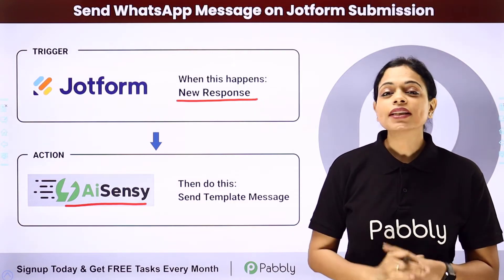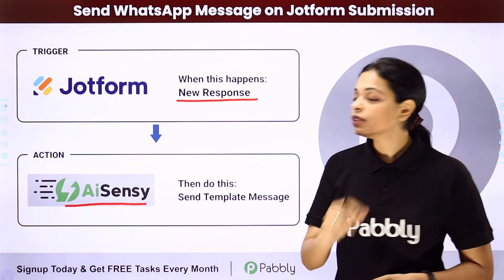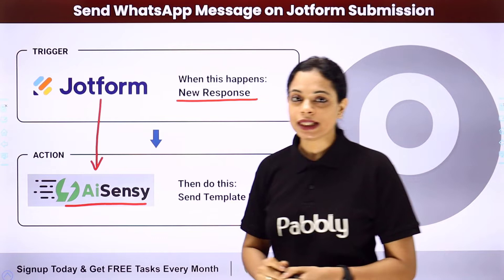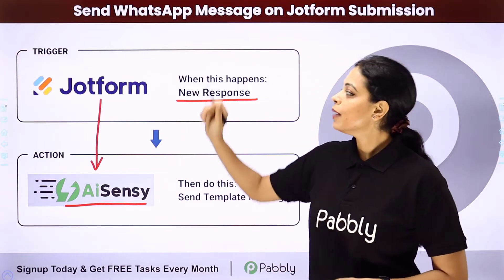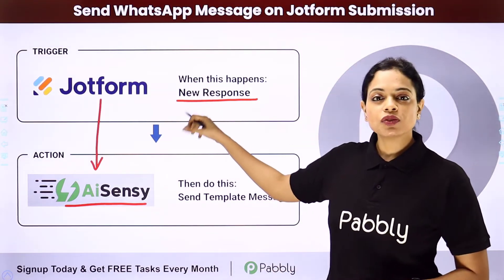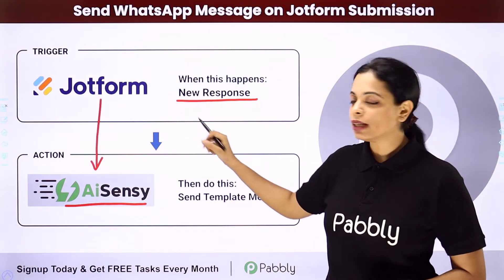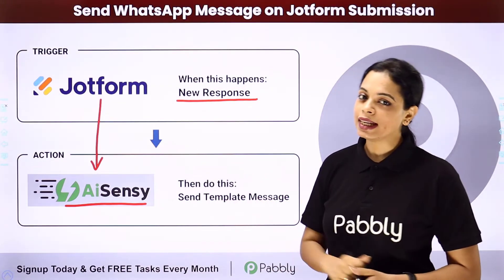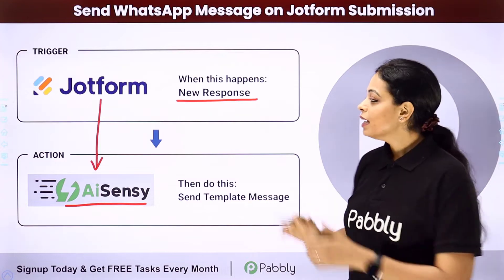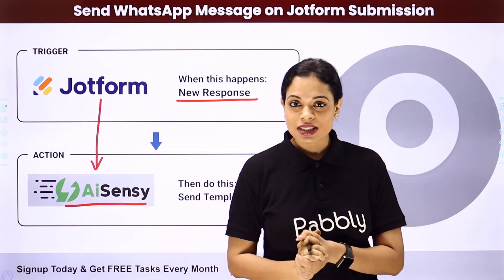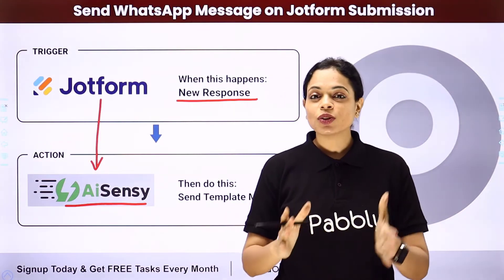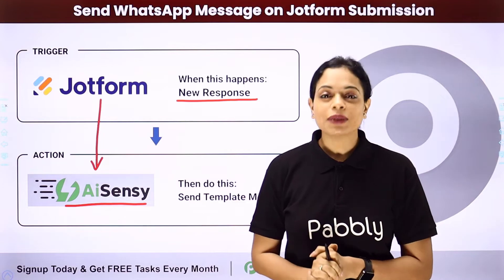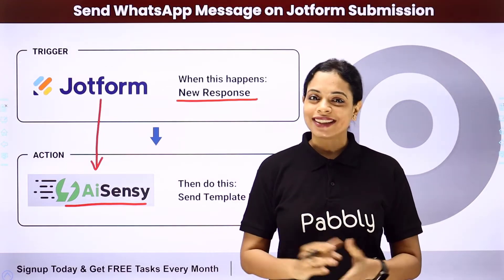How can that be done? For this, we will be integrating these two applications using Pabbly Connect. Here, my trigger application will be JotForm and my action application will be AISNC. To understand how you can do this yourself — integrate and automate this entire process — let me take you to my screen.